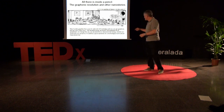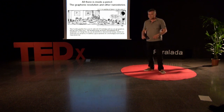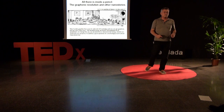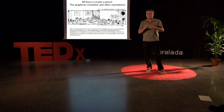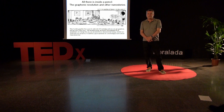That little graphite thing inside the pencil is the origin of graphene. How could I explain to you what is graphite and what is graphene?